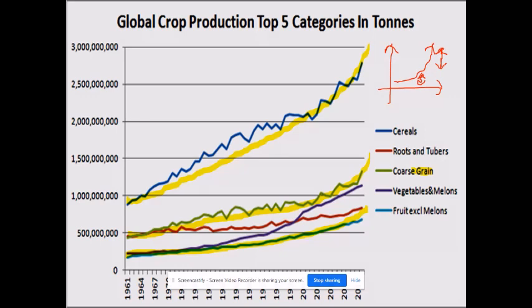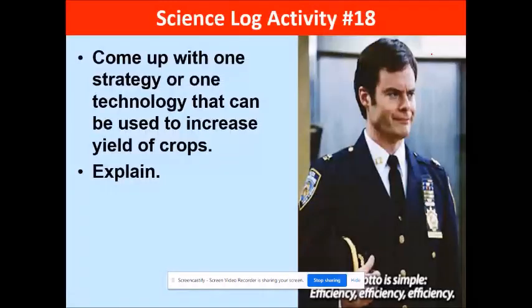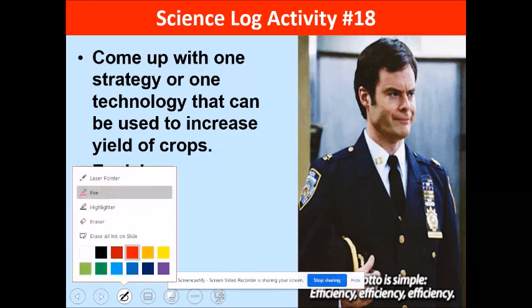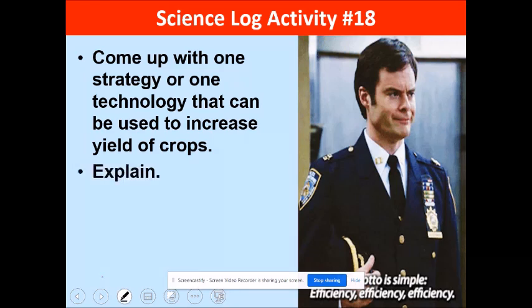Please pause this video and come up with at least one strategy — traditional or technological — that humanity can use to increase crop yield. How can we increase the useful part of every grain or fruit? Write it down and discuss your answer with the substitute teacher.